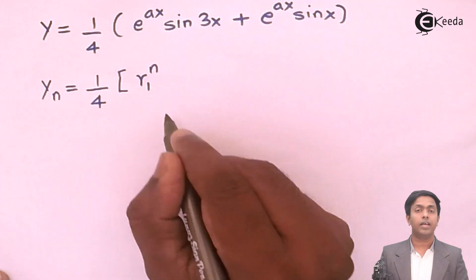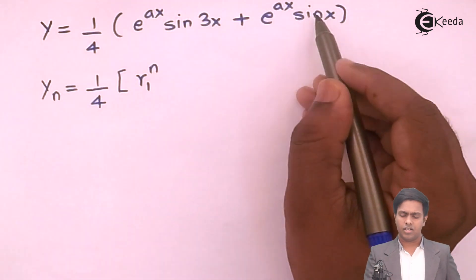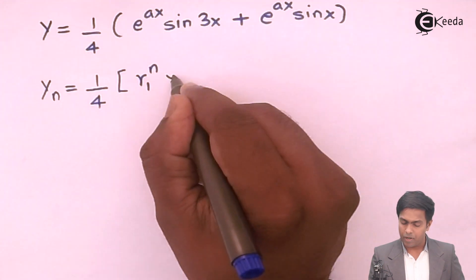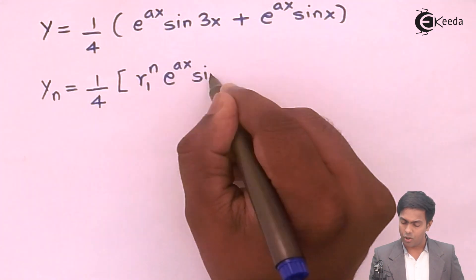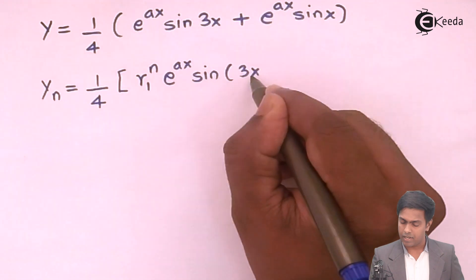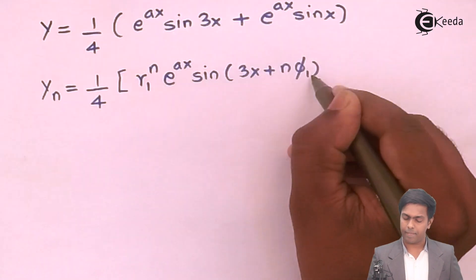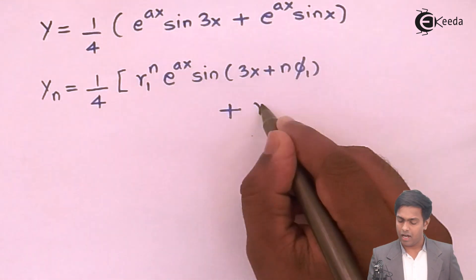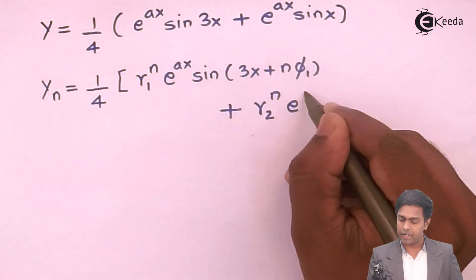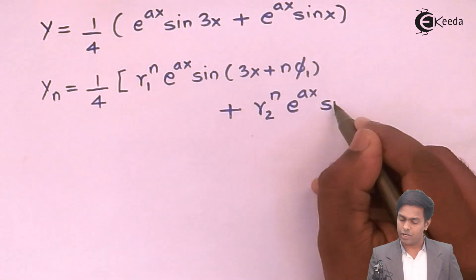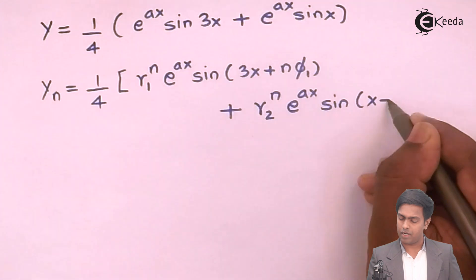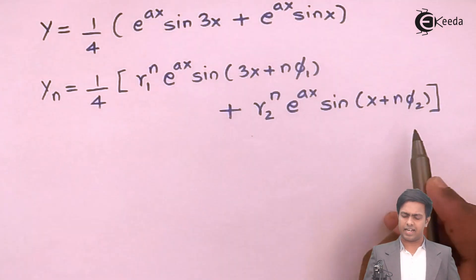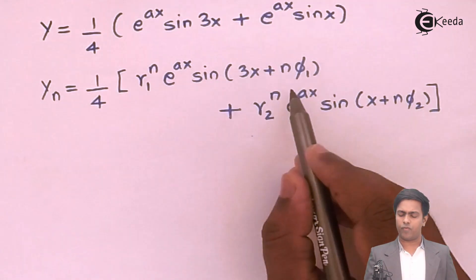So r1^n · e^(ax) · sin(3x + nφ1) for the first term, and r2^n · e^(ax) · sin(x + nφ2) for the second term. Let's now write the values of r1, r2, φ1, and φ2.